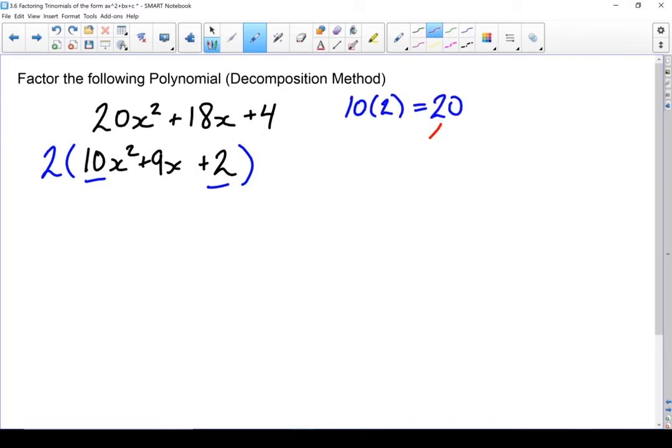So I'm looking for factors of 20. So numbers that multiply together to give 20, but add together to give plus 9. So if I try 10 and 2, if I add those together, I end up with 12. That doesn't work. Let's do 5 and 4. That gives me a plus 9. Those are the factors I'm looking for.